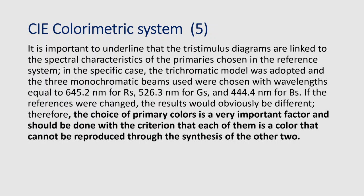It is important to underline that the tristimulus diagrams are linked to the spectral characteristics of the primaries chosen in the reference system. In this specific case, the trichromatic model was adopted and the three monochromatic beams were chosen with wavelengths of 0.64 microns for red, 0.52 microns for green, and 0.44 microns for blue. Out of the infinite possible blues, greens, and reds, one particular red, green, and blue must be chosen. These three colors were chosen with dominant wavelengths represented by these three quantities. If the references were changed, the results would obviously be different.